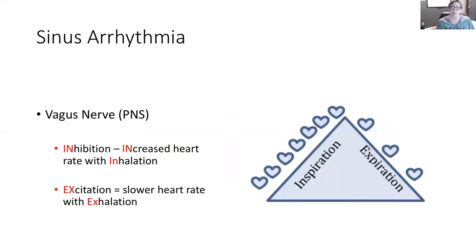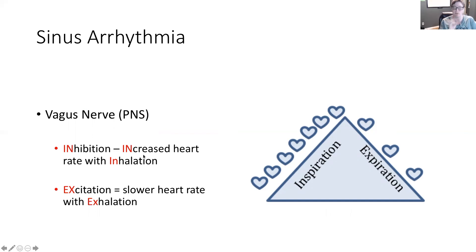Here's another way to look at it. The vagus nerve is controlled by the peripheral nervous system. When the vagus nerve is inhibited with inhalation, we have increased heart rate — three 'ins' to help you remember that. When the vagus nerve is excited, we're going to have a slower heart rate with exhalation.